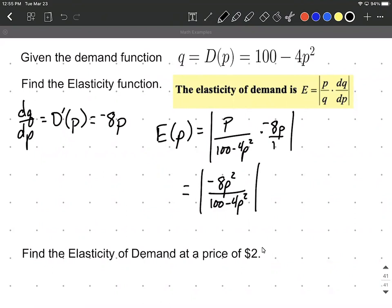still inside our absolute values. Now to get rid of our absolute values, usually what happens is we just go ahead and drop that negative from in front of the 8, and we'll enter our solutions in as 8p squared over 100 minus 4p squared, as being our elasticity of demand function.